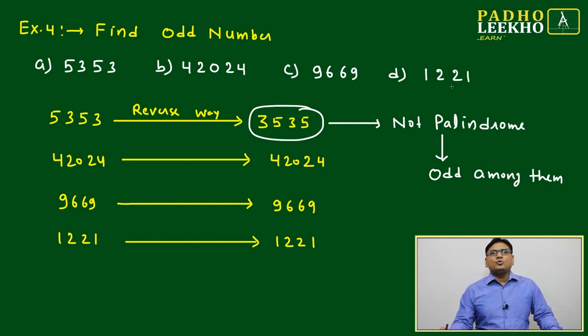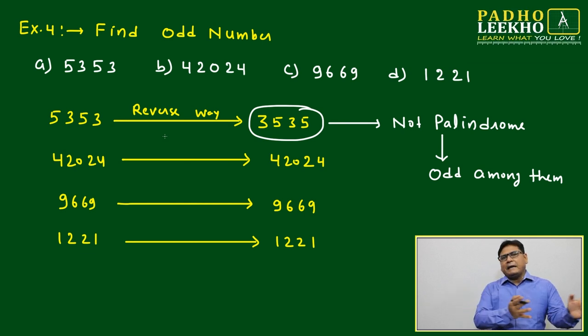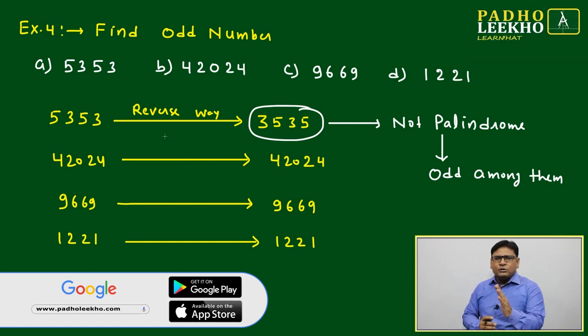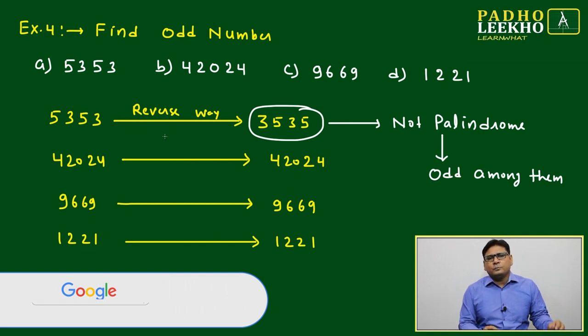5353, we will write in reverse way. That is called the concept of palindrome. A palindrome is if you are writing the number from right to left or left to right, in both cases you are getting the same number. That is called a palindrome.